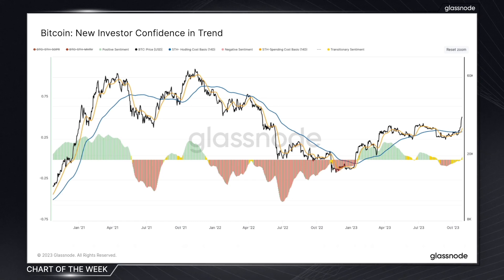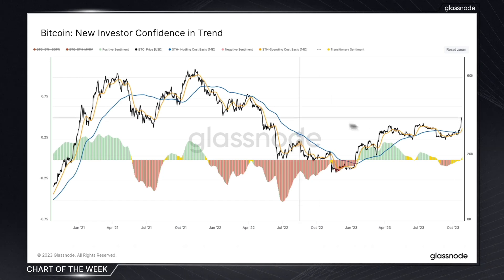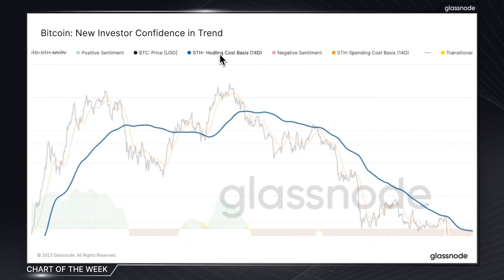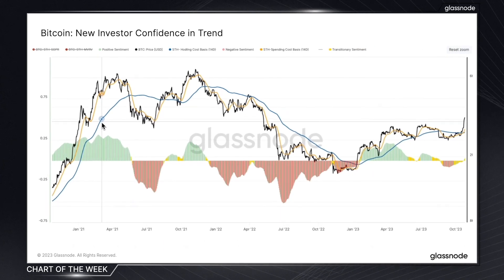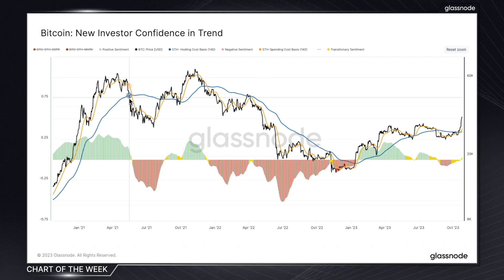From taking these two cost basis models and merging them, we've designed an oscillator which tracks the short-term holder's confidence in the prevailing price trend. This blue line here is the cost basis for all the new investors, and as it derives from MVRV, it represents the cost basis for coins with an unrealized profit or loss which are still being held by short-term holders.